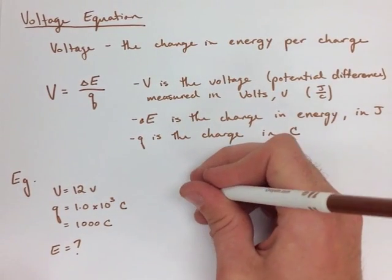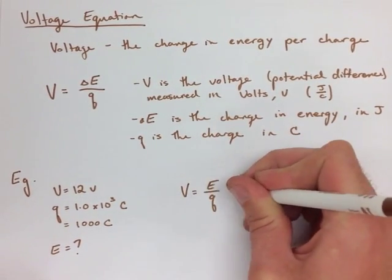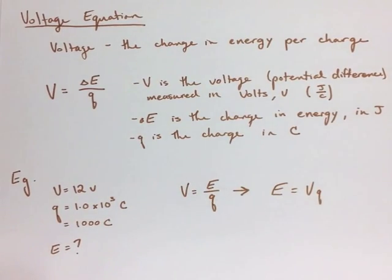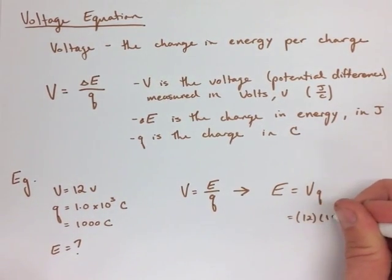So, we use our V equals E over Q equation, and we change it to E equals VQ, and we find that we have 12,000 volts.